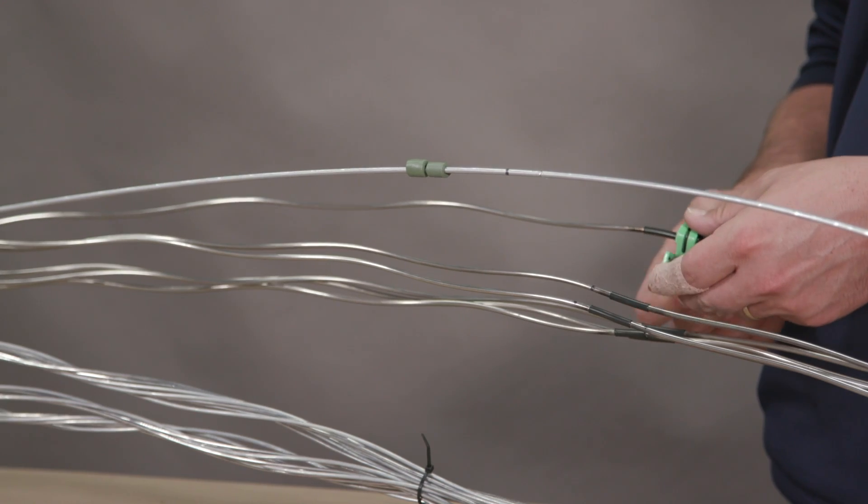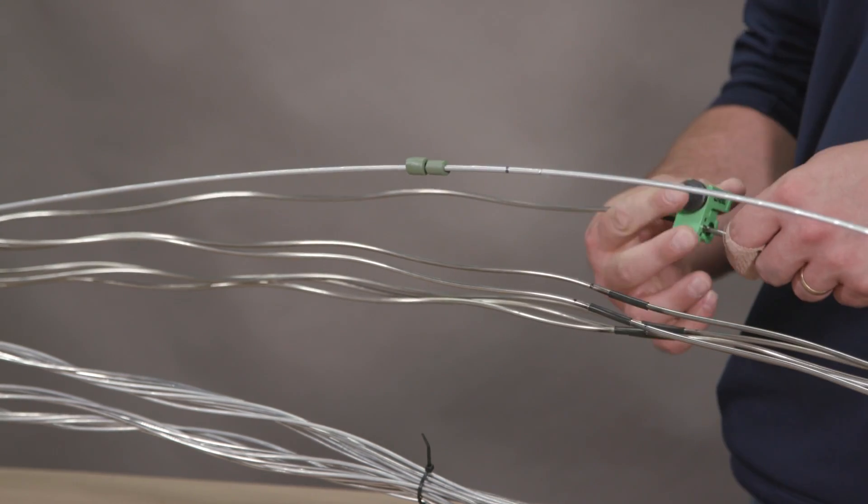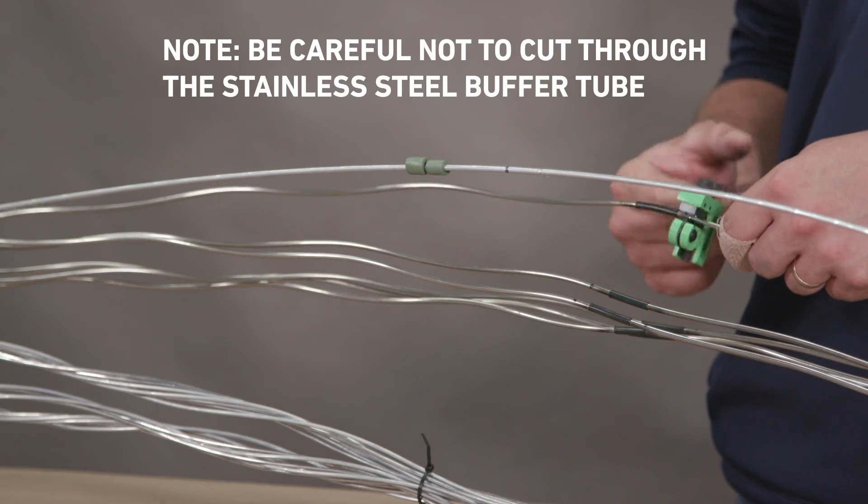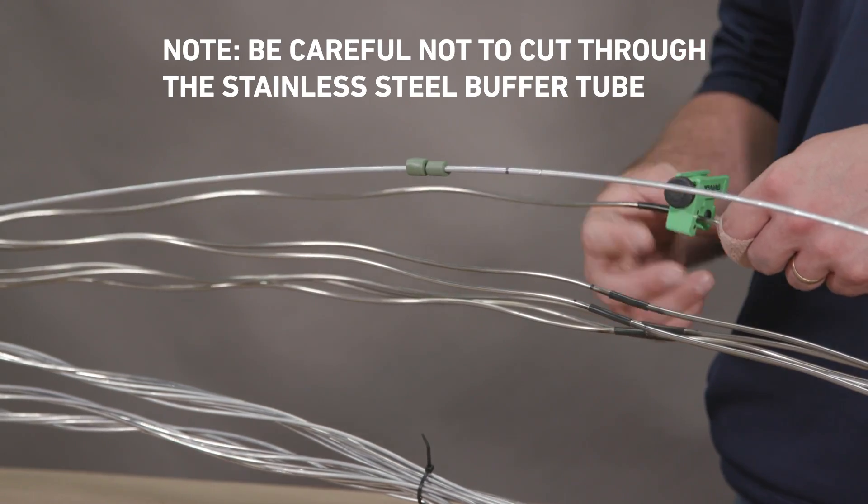Use the stainless steel tube cutter to score each buffer tube at the outer marked location. Note, be careful not to cut through the stainless steel buffer tube.